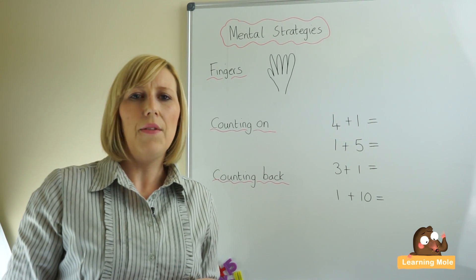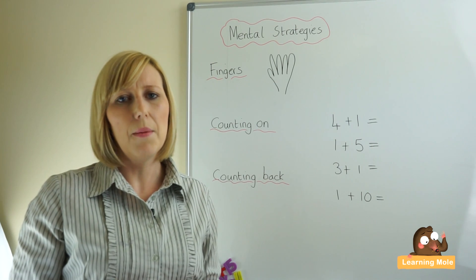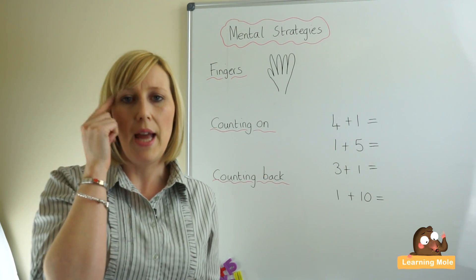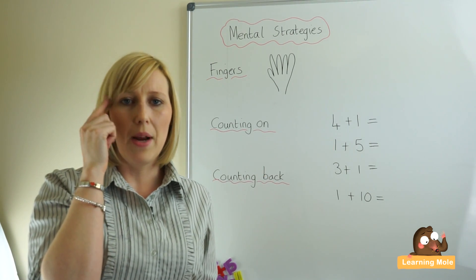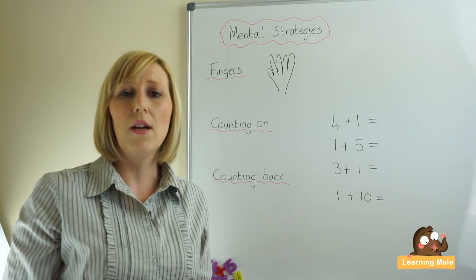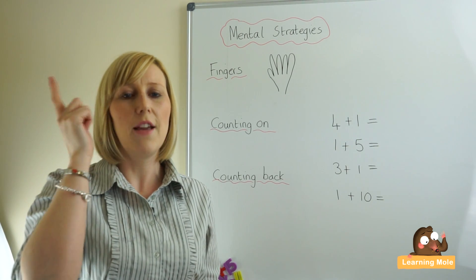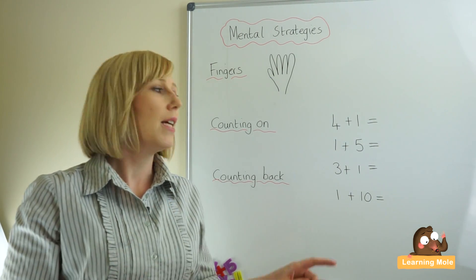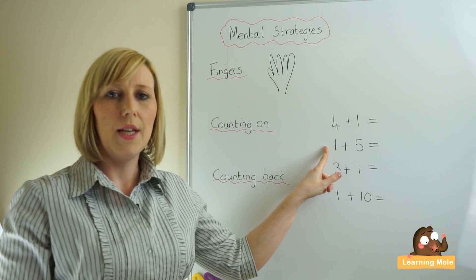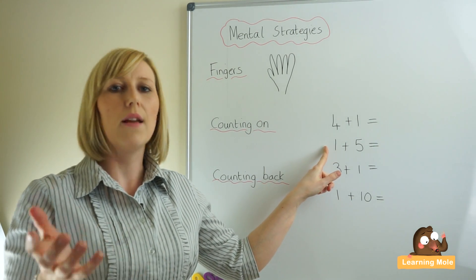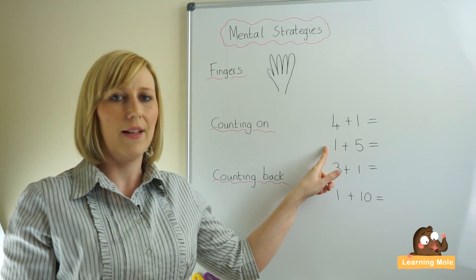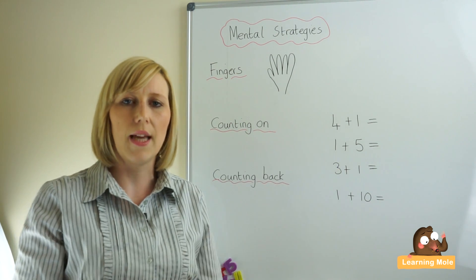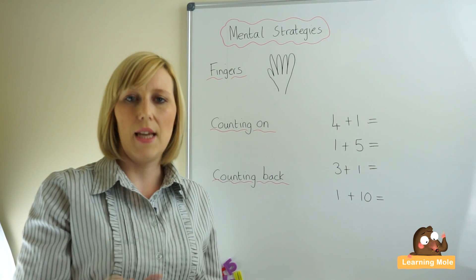We want to encourage them to put the biggest number in their head. So we're putting four in our head and adding on one, putting one on your fingers, and saying 'four, five.' Then for five and one, we put the biggest number first — five goes into their head — and they say 'five, six.'